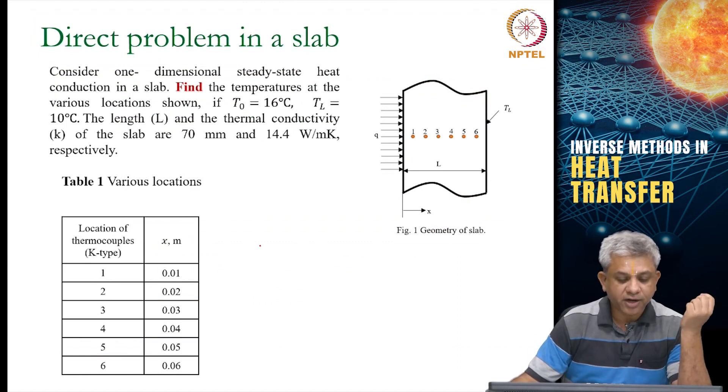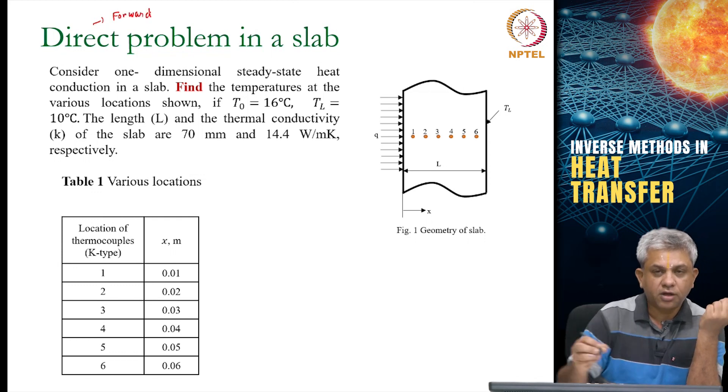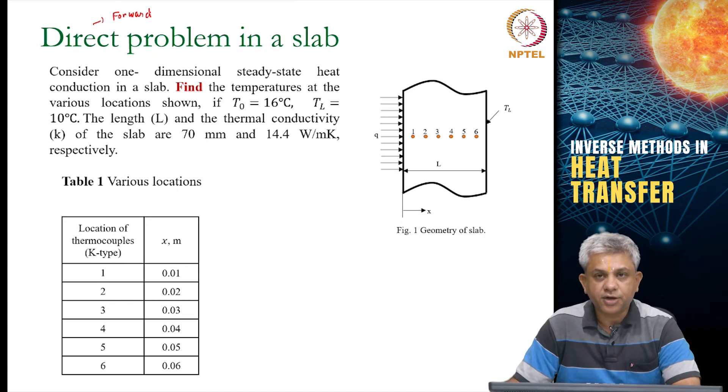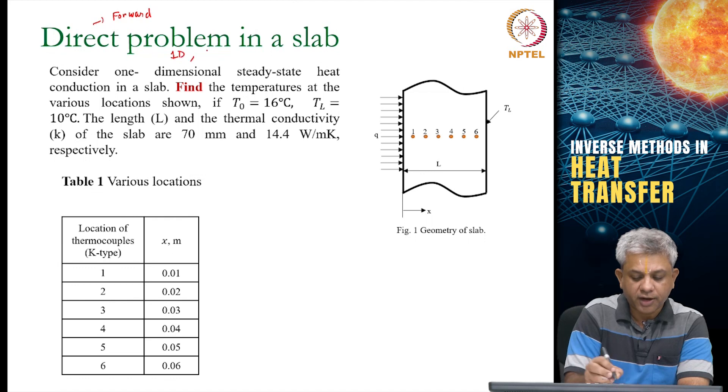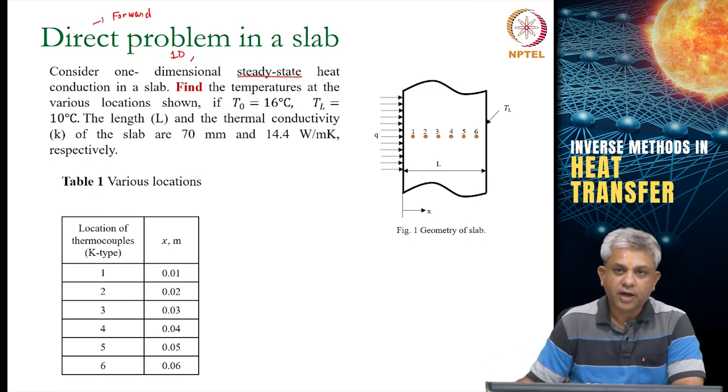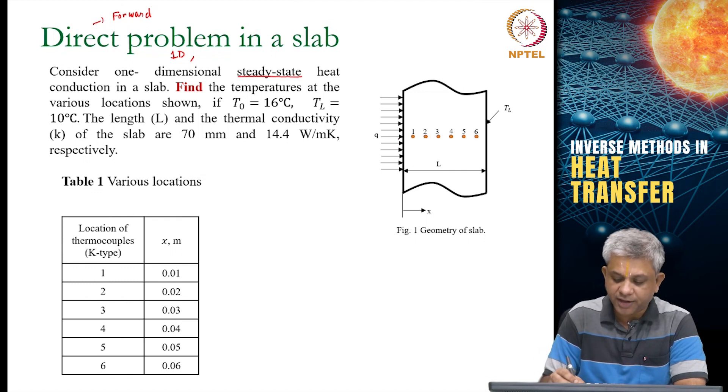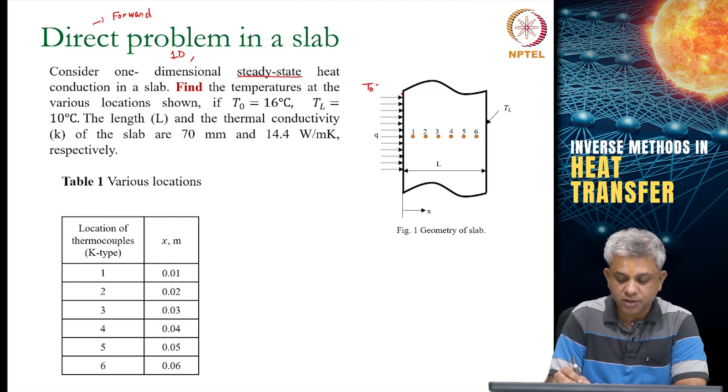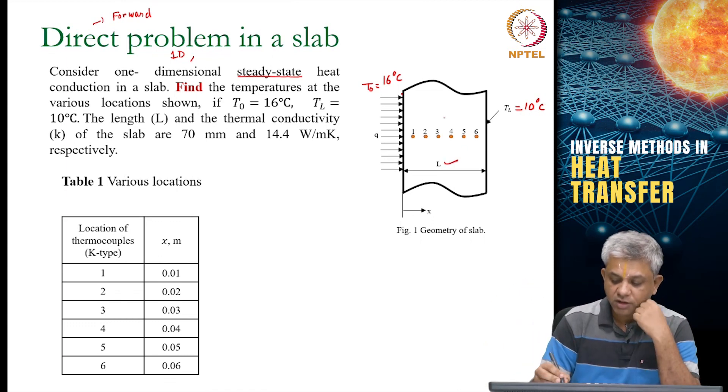Here is the example of a direct or forward problem. It is a very simple forward problem you have already solved during your heat transfer class. Consider one-dimensional steady-state heat conduction in a slab. Let's say the left-hand side temperature T0 is 16°C and T at x equal to L is given to be 10°C. You are given the temperatures on the left and right end, the length is given, and the conductivity is given.